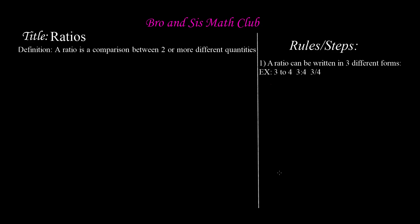As you can see, here we have a definition that says a ratio is a comparison between two or more different quantities. That means a ratio is something that we use to compare two or more different quantities.